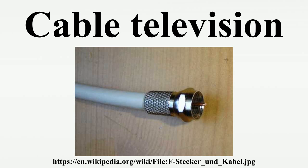Either the subscriber's television or a set-top box provided by the cable company translates the desired channel back to its original frequency, and it is displayed on screen. Due to widespread cable theft in earlier analog systems, signals are encrypted on modern digital cable systems, and the set-top box must be activated by an activation code sent by the cable company after the subscriber signs up.